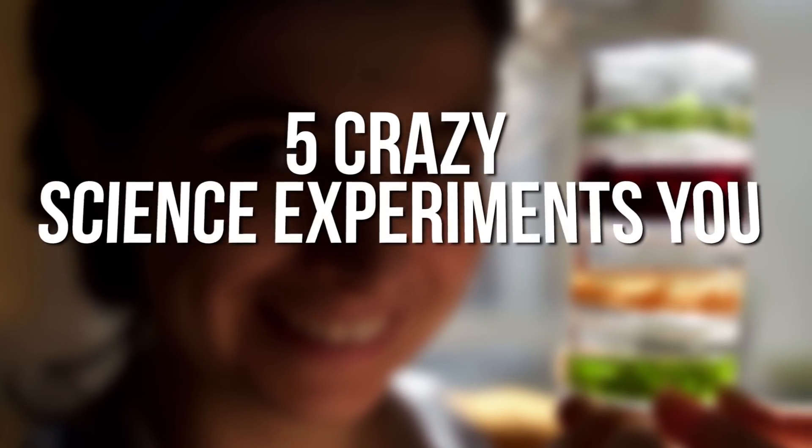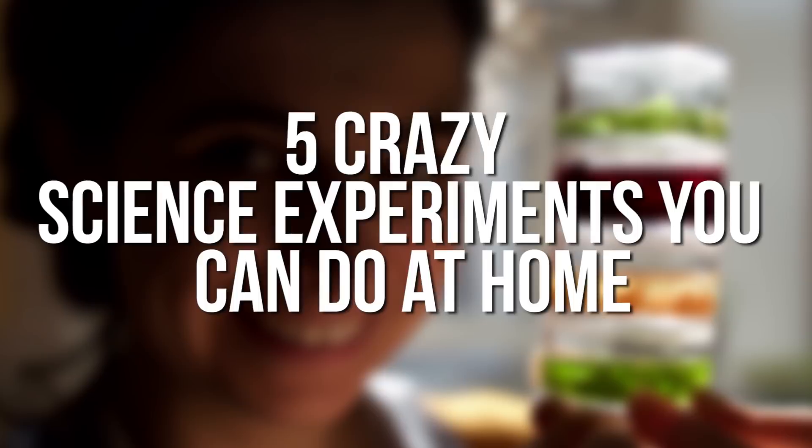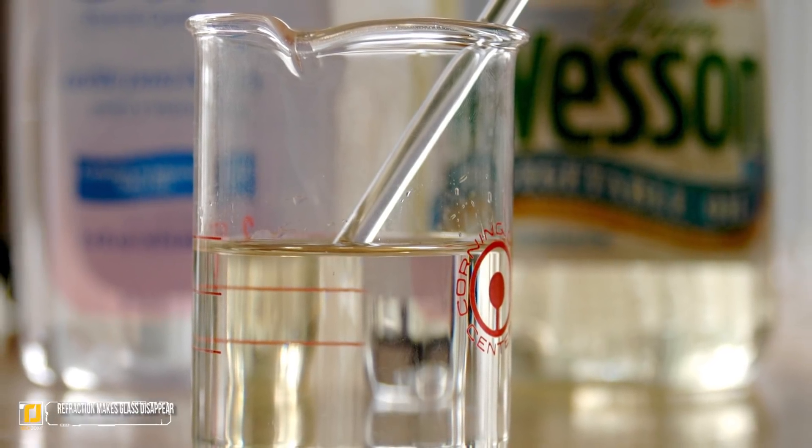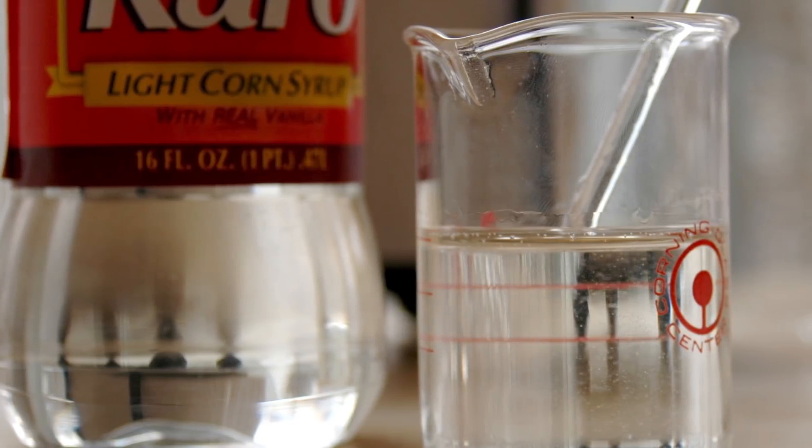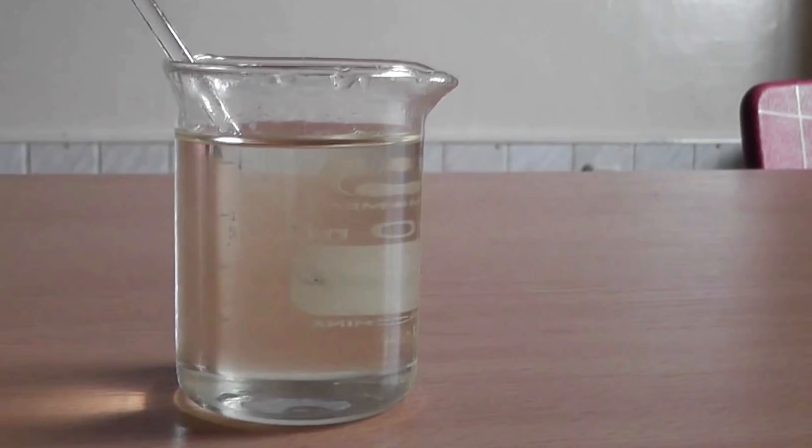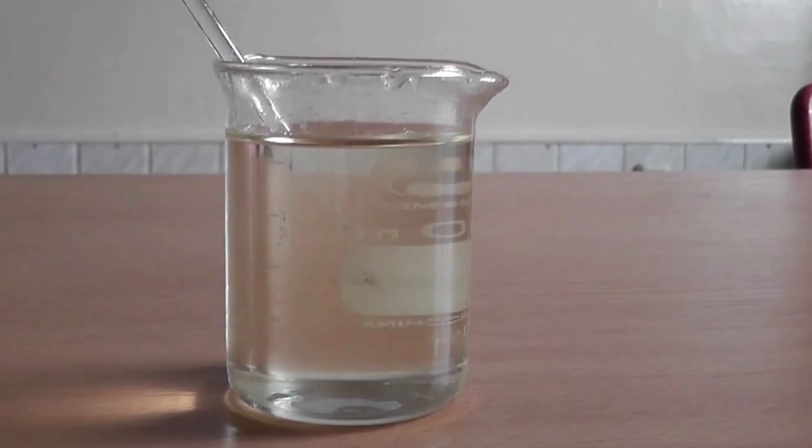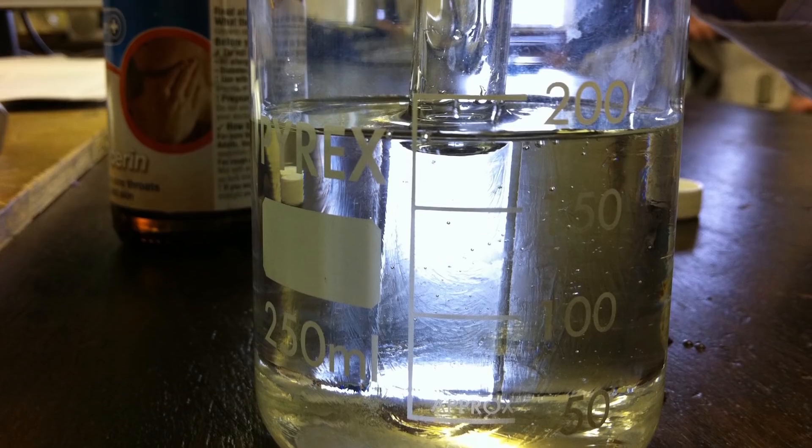Five crazy science experiments you can do at home. Number five: refraction makes glass disappear. Making objects disappear is an impossible feat unless you use some tricky science to trick your brain into thinking that they have. This is the...